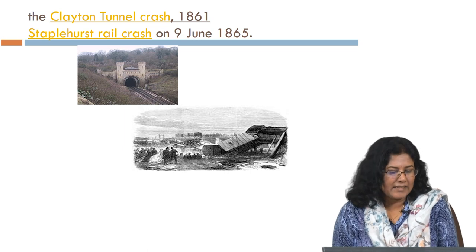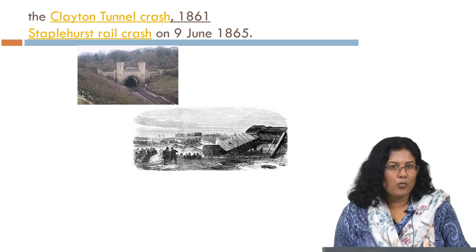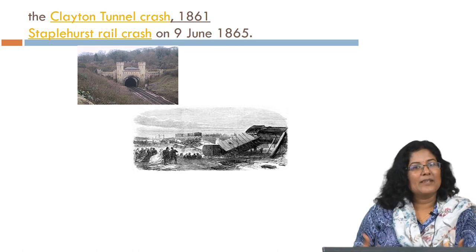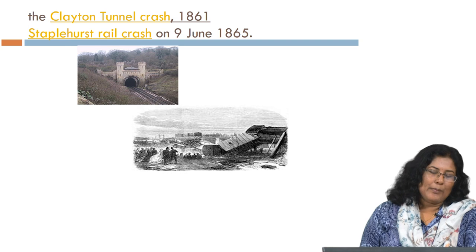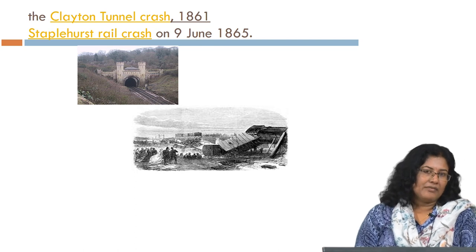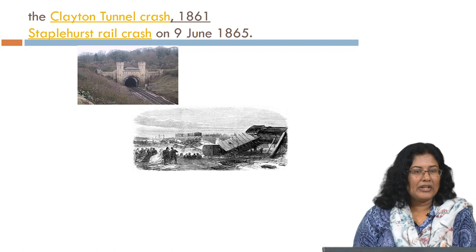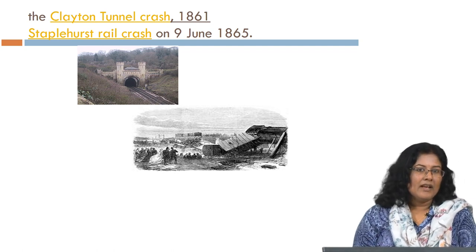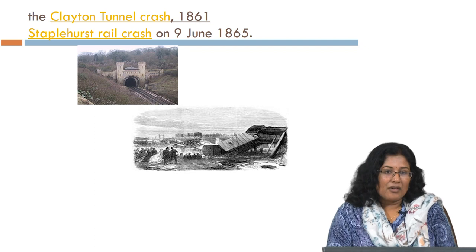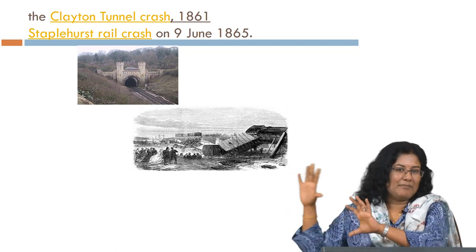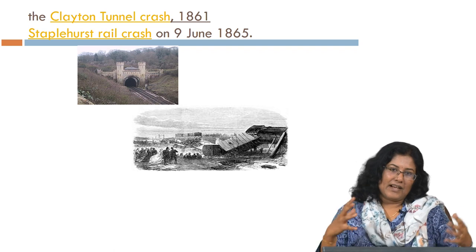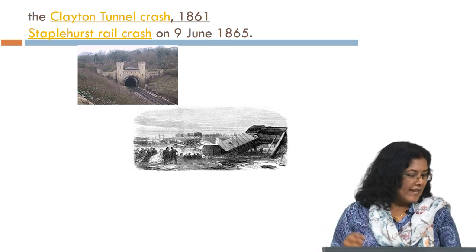There was a train crash at this locale in 1861, and the second illustration is of the Staplehurst rail crash in which Dickens himself was involved. Critics say these two train crashes — in 1861 and 1865 — could have influenced Dickens to produce this gothic story in 1866, where the key figure becomes the train. There is also the spectre, but the train becomes an important plot element associated with how the plot develops and ends.